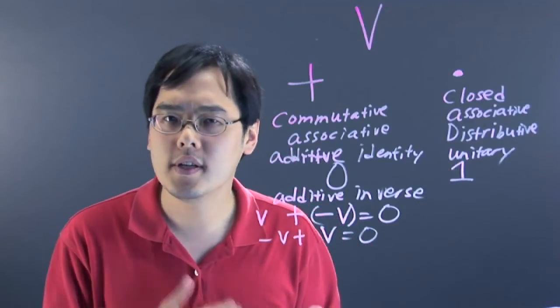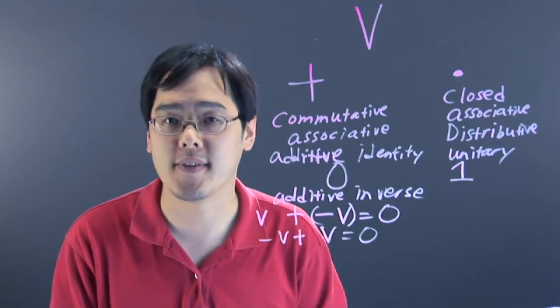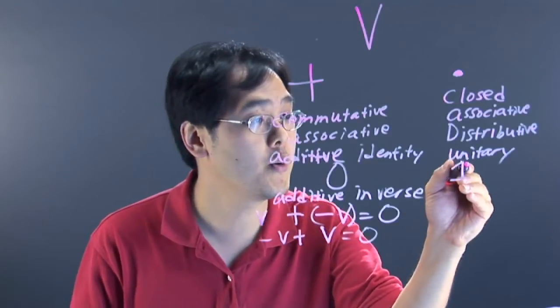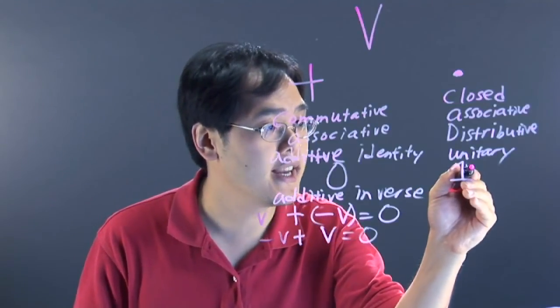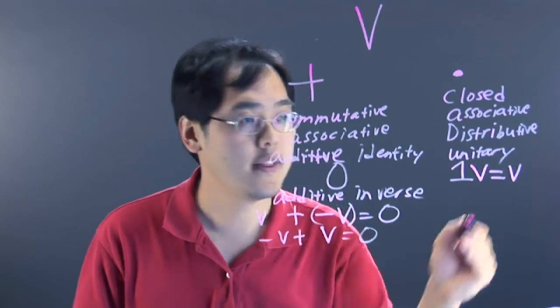I know it sounds kind of weird to make sure that one belongs in a set of vectors, but again, it depends on how the set is defined. Not every set of vectors contains the element one. How the one operates is that you can multiply it by any vector and get that vector back.